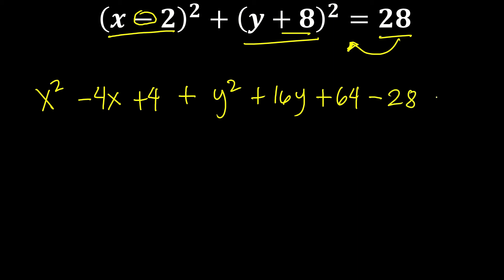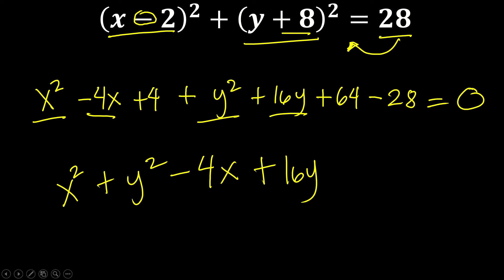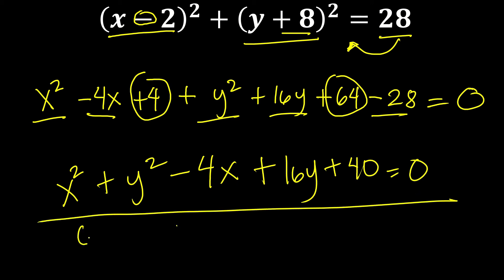Rearrange the terms: x squared, followed by y squared, then the term with x which is negative 4x, then plus 16y, then simplify the constants: 4 plus 64 gives 68, and 68 minus 28 is positive 40. So the general form of the equation of the circle is x squared plus y squared minus 4x plus 16y plus 40 equals zero.